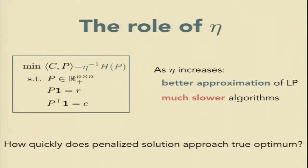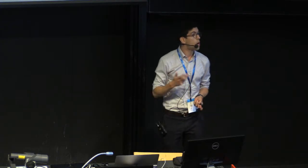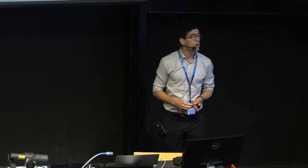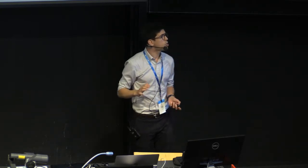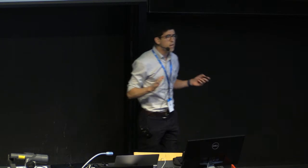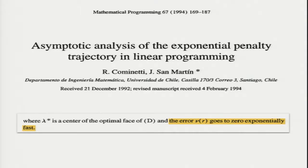Now, in some work from last year, we showed that you can take eta to be of order 1 over epsilon, where epsilon is the accuracy that you're going for. But if you ask people in the optimal transport community, they'll say, actually, there's something much better. They'll say, well, there's this great 1994 paper by Cominetti and San Martin that does an asymptotic analysis of this program and shows that actually the error converges to zero exponentially fast.